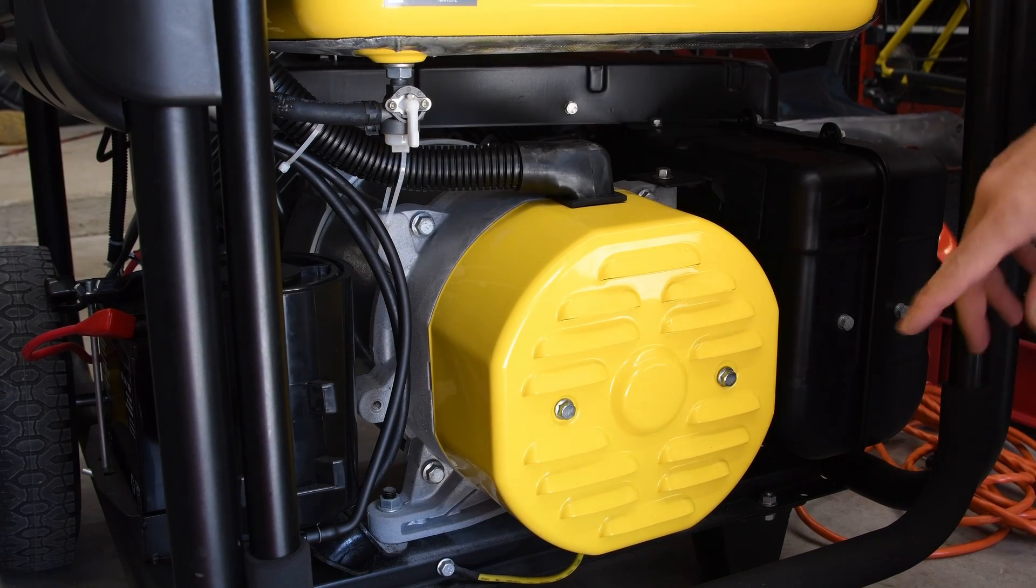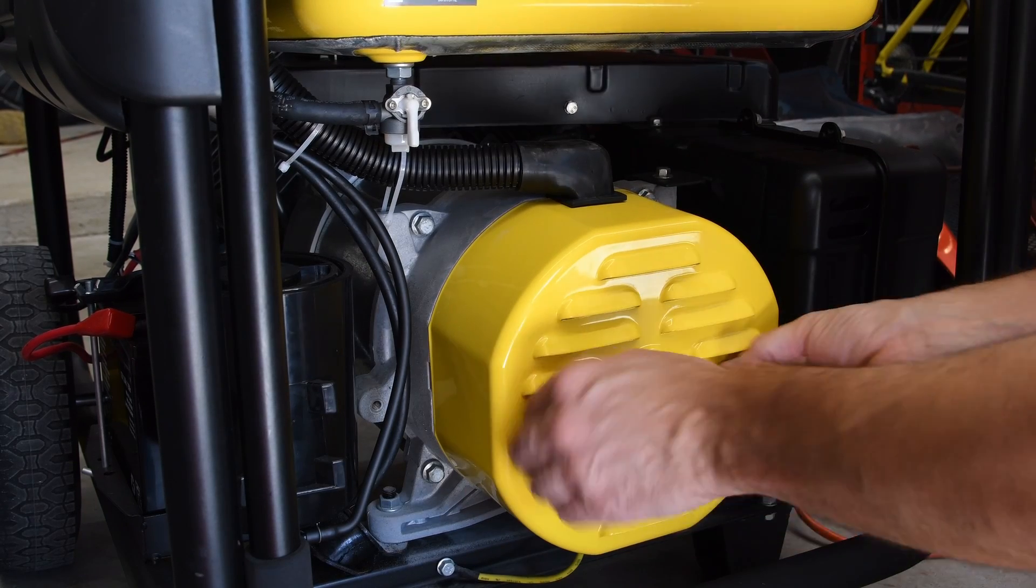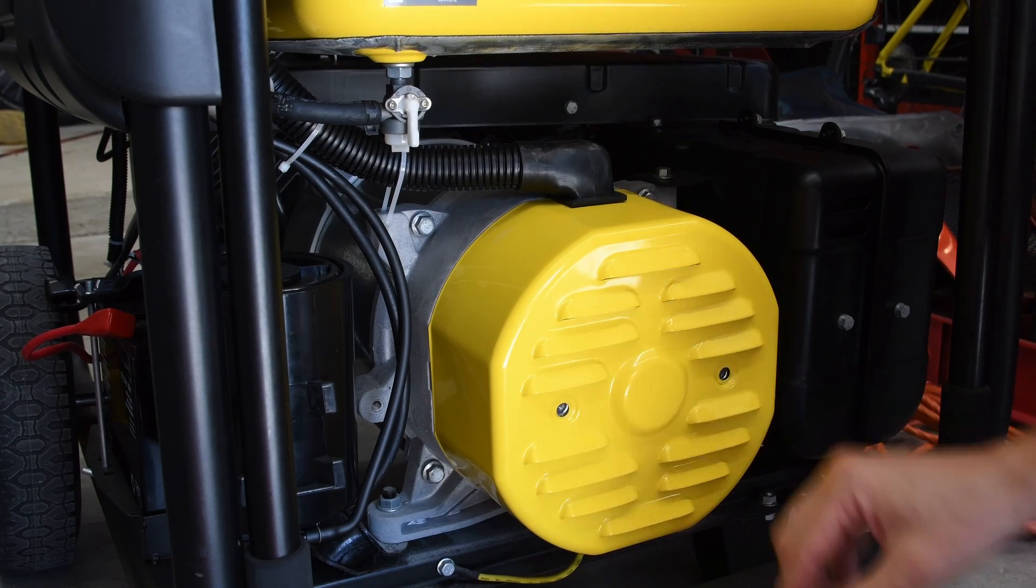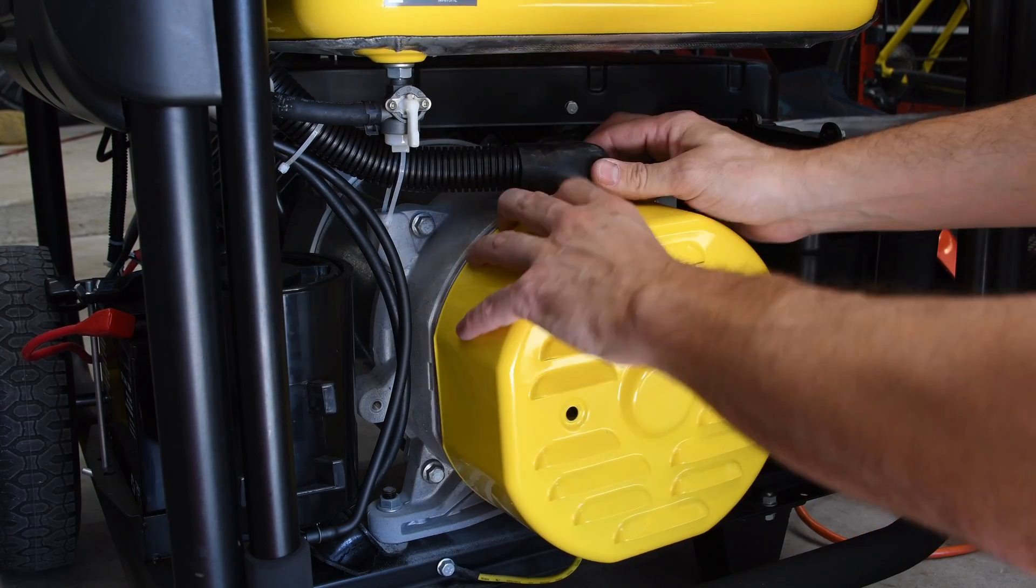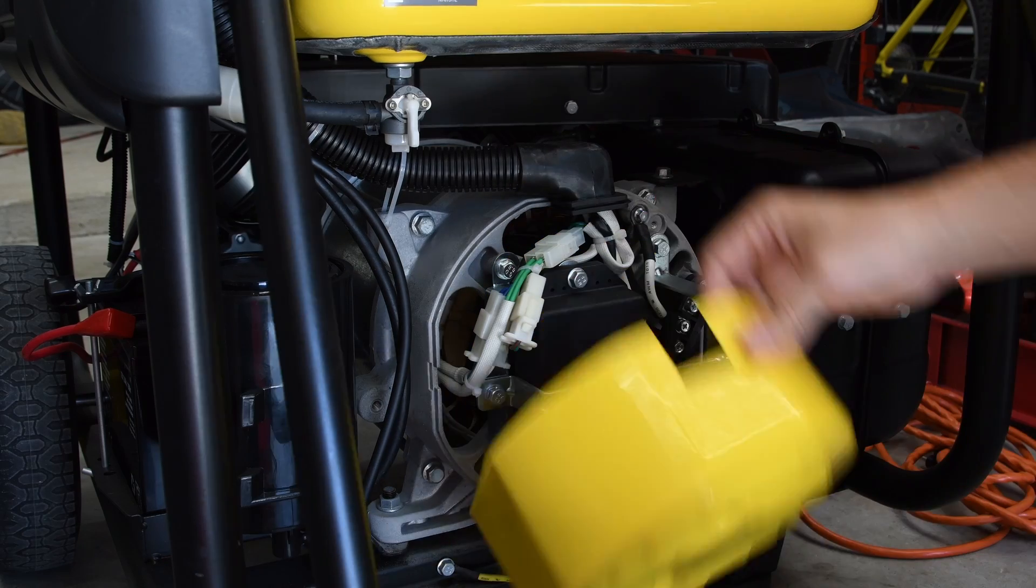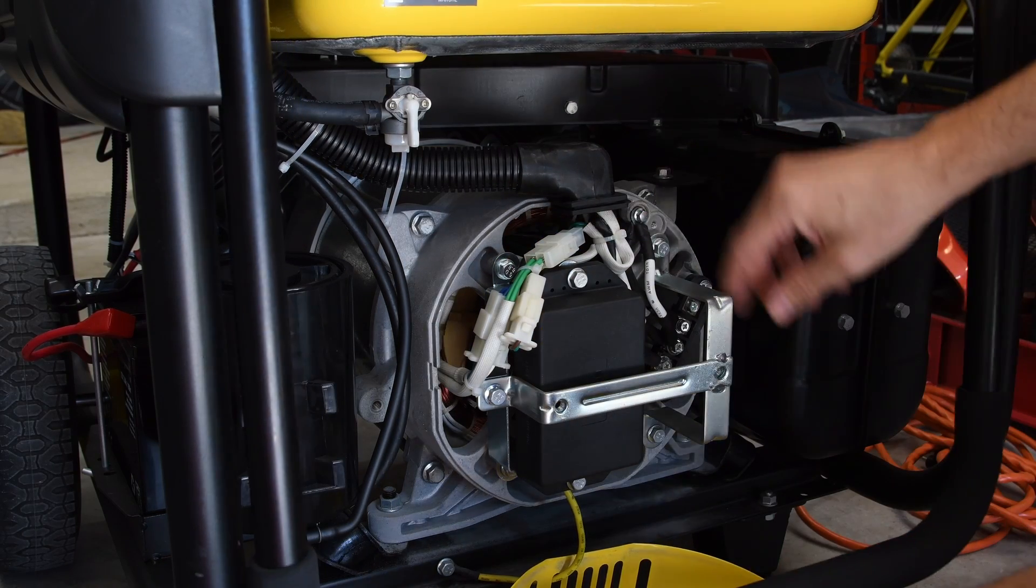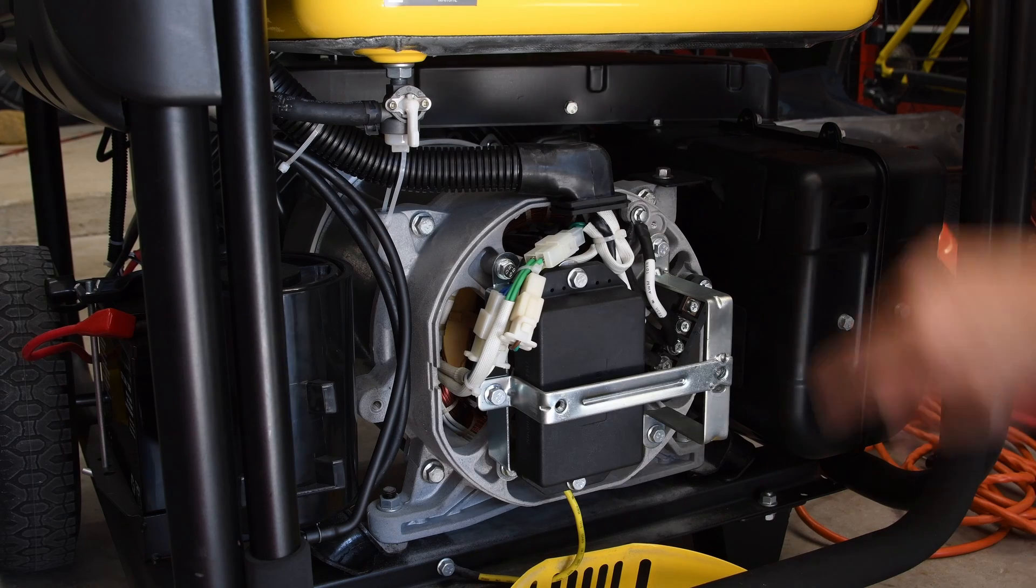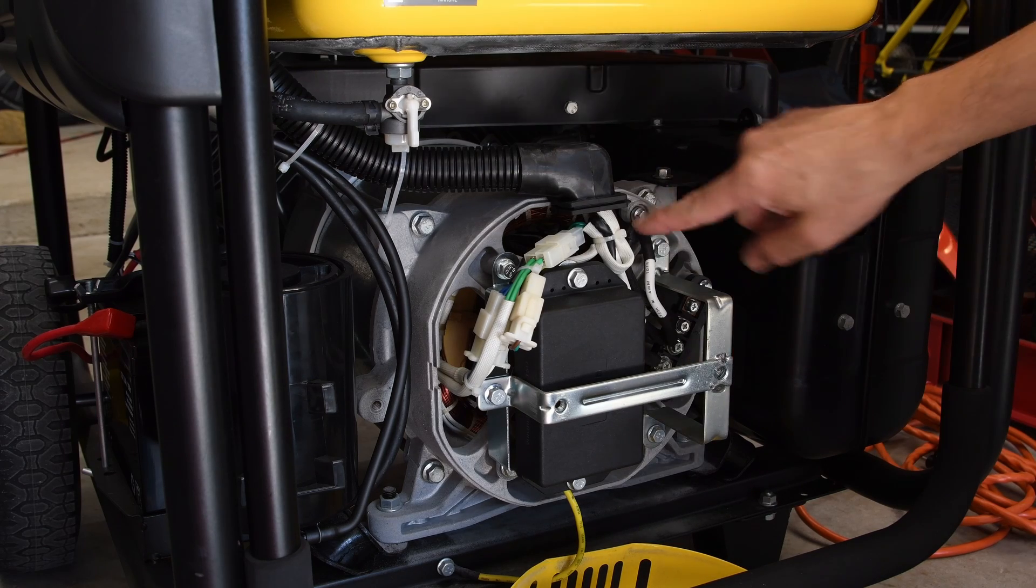So in order to access the bridge, I'm going to remove this cover. I got already the bolt loose. And right here, you can see the ground to neutral bridge.